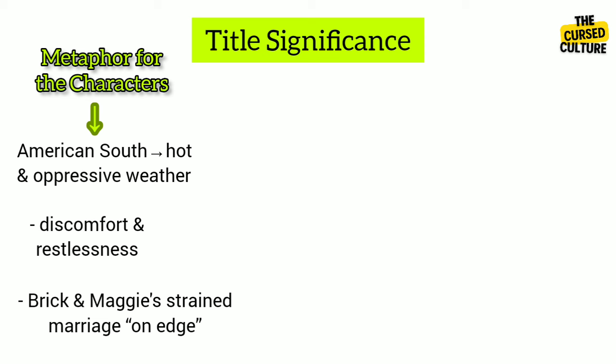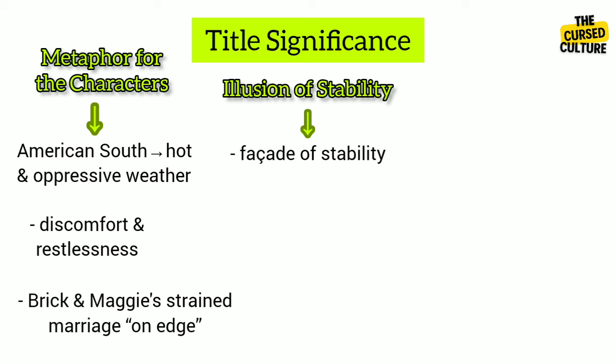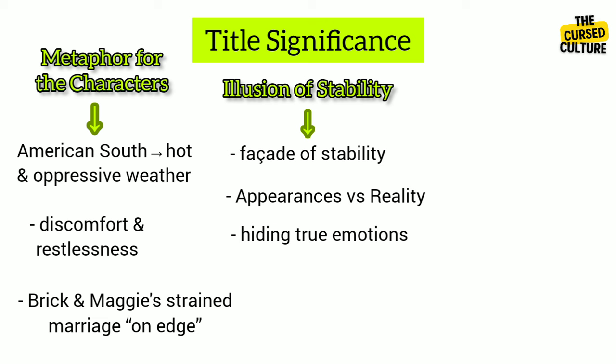A cat on a hot tin roof may appear calm and composed on the surface, but beneath the exterior it is in distress due to the scorching heat of the roof. Similarly, the characters in the play often try to maintain a facade of stability and composure, hiding their true emotions. The title highlights the theme of appearances versus reality — what seems stable and tranquil on the surface can be fraught with tension and turmoil beneath.